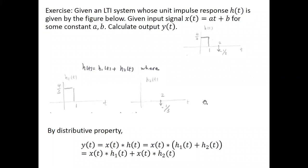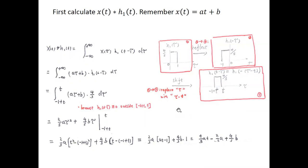We look at these two terms separately. First, we need to look at h(t−τ) because that is what we need in the integral defining convolution. If we plot h1(τ) in the τ axis, it is still this platform with height 4/3 ranging from 0 to 1. We first reflect this signal to obtain h1(−τ), which ranges from −1 to 0, and then shift it by t so the range changes from (−1+t) to t. This parameter t indicates how much we shift the signal.